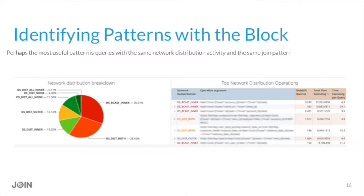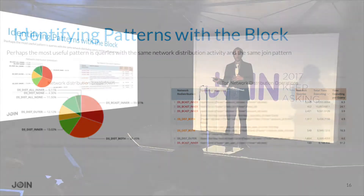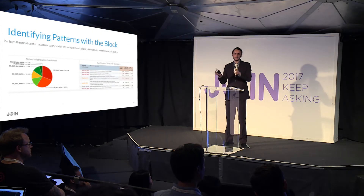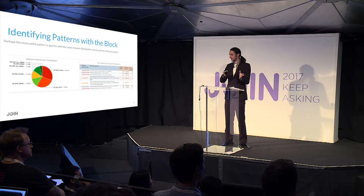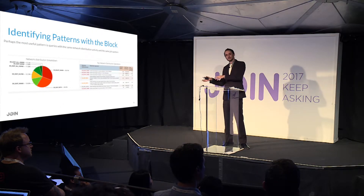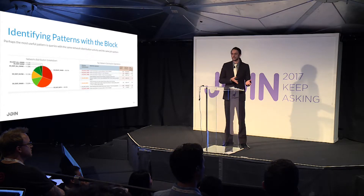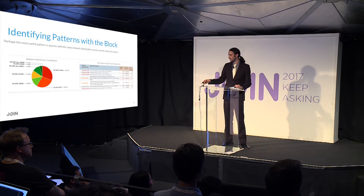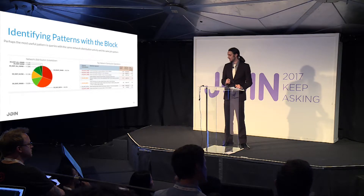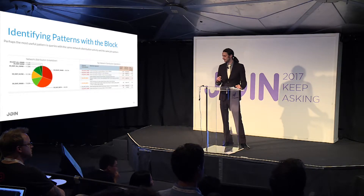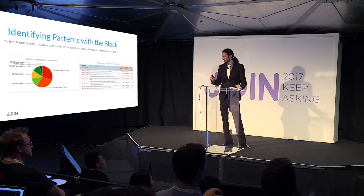The first tile on the left is a pie chart showing the share of types of network activity. Anytime you choose to distribute things one way or another, it's a trade-off — you're moving things around so that some joins can perform better, but some joins will suffer a bit. In general, you want to look for more green slices than red.